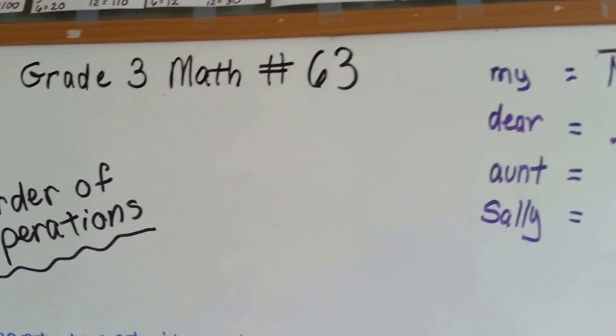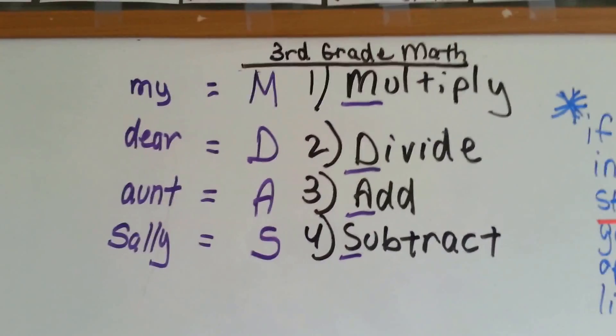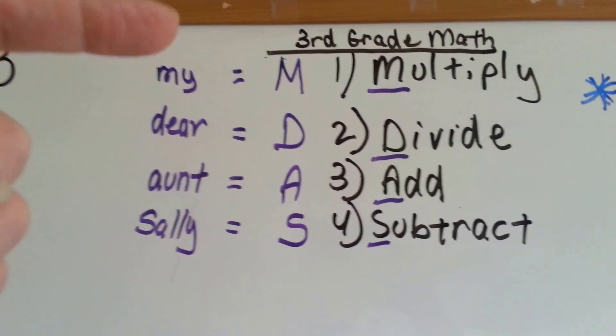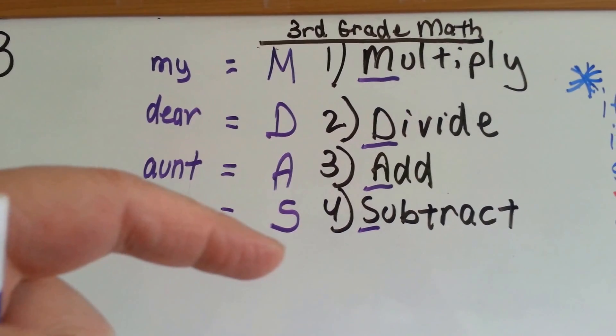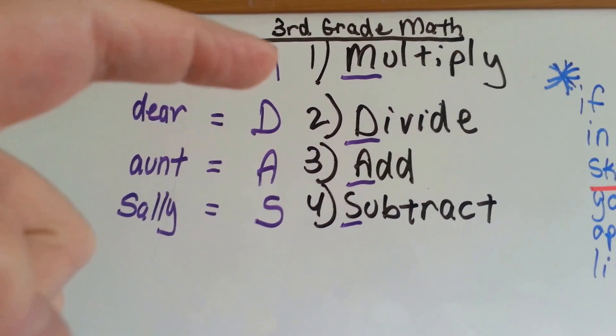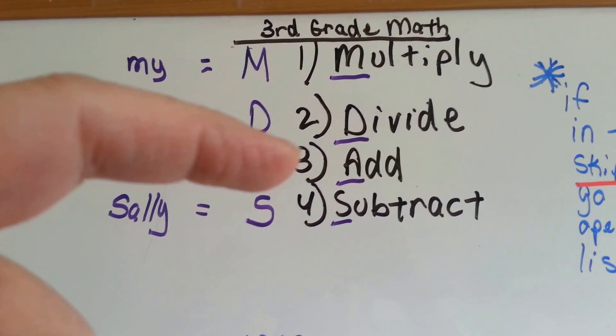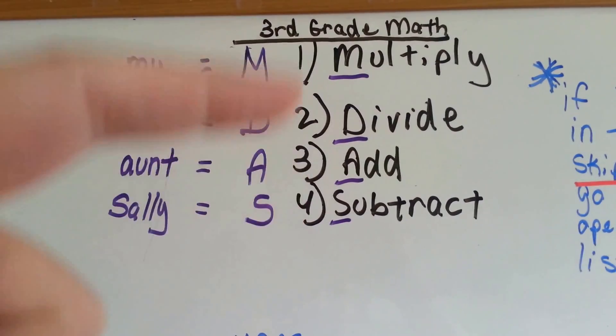Operations are the way we're going to do things, and they have to be done in a certain order. For 3rd grade math, we're going to only do MDAS: multiply, divide, add, and subtract. You would do multiplication first, division second, then add, then subtract, and you have to do them in this order.